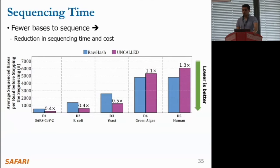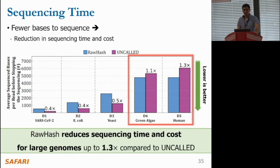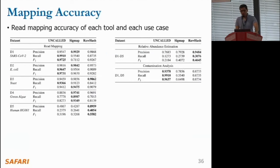We also look at how quickly RawHash and UNCALLED stop sequencing based on the number of bases processed before stopping the mapping of a read. These numbers are shown on the y-axis of this figure, and fewer bases to sequence provides an estimate of how much we can save from sequencing time and potentially cost, so lower is better. We find that RawHash reduces the sequencing time and potentially cost for large genomes by up to 1.3 times compared to UNCALLED. This shows that UNCALLED is not scalable to larger genomes, potentially due to increased noise with a larger number of regions challenging its probabilistic decision.